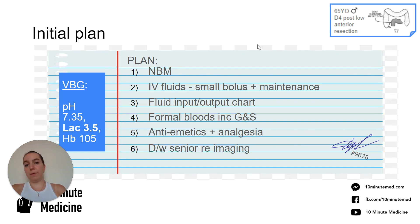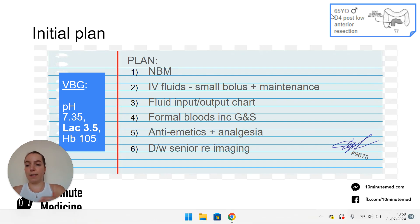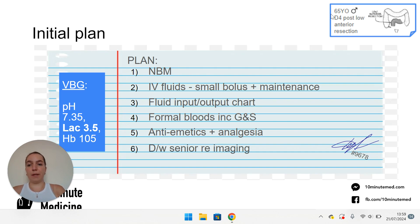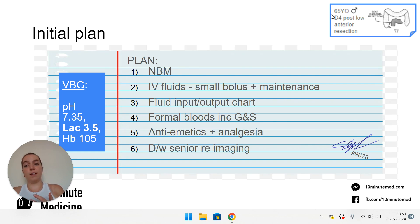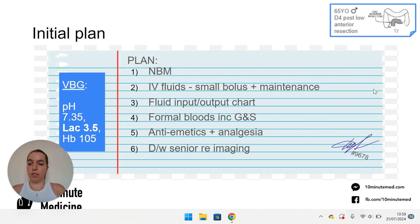While someone's nil by mouth, you should be prescribing them fluids. His blood pressure and heart rate is a bit up and down, so maybe give him a small bolus, see how he responds, and then prescribe some maintenance. Always record a fluid input-output chart in these patients — having a catheter in makes life a bit easier, but if you didn't, you might consider putting one in. I would also be doing some bloods, checking the Hb again, making sure on formal bloods it's stable. Maybe send off a group and save — don't always assume there's an up-to-date one on the system. Obviously, symptomatic management: antiemetics and analgesia.